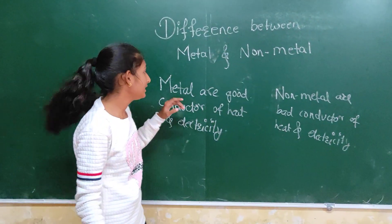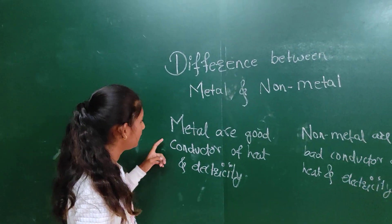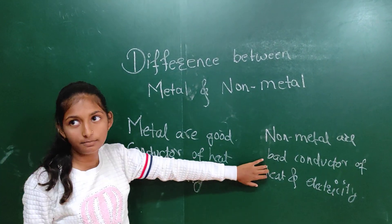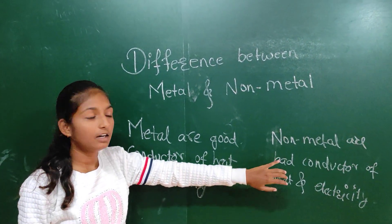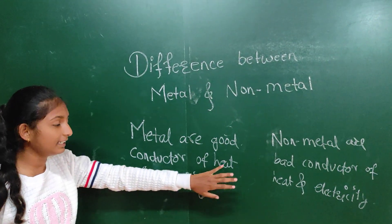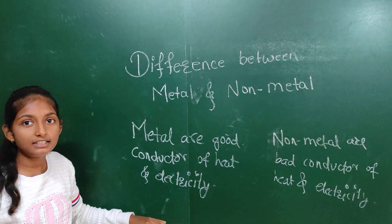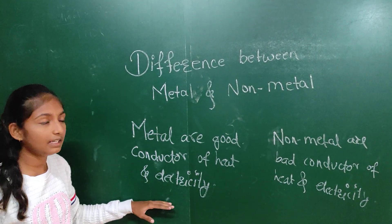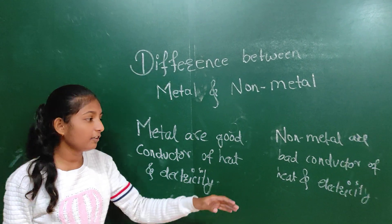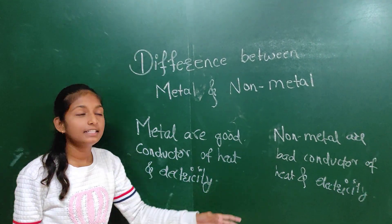Metals are good conductors of heat and electricity, and non-metals are bad conductors of heat and electricity. Then, metals are malleable, which means they can be drawn into thin sheets, and non-metals are non-malleable.